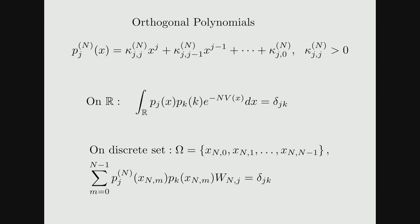At the top of the screen is the orthogonal polynomial of degree j. The leading coefficient kappa_{j,j} is positive and they all depend upon a parameter n, so there's usually a superscript n. The orthogonality is either on the real axis or on a discrete set. These points are called the nodes — there are n nodes indexed from 0 to n minus 1. On a discrete set, the orthogonality condition is a discrete sum instead of an integral.